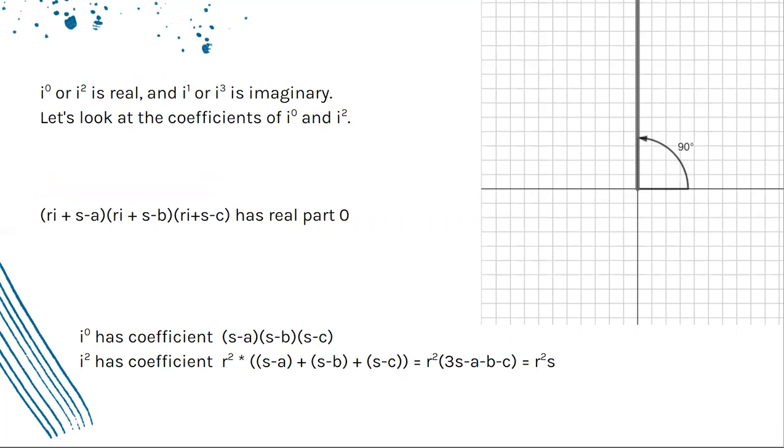Okay, well now let's think about the various coefficients of i here. When i is raised to the zeroth or second power, it's real. When it's raised to the first or third power, it's imaginary. We want the real part to be zero, so let's find the real part.